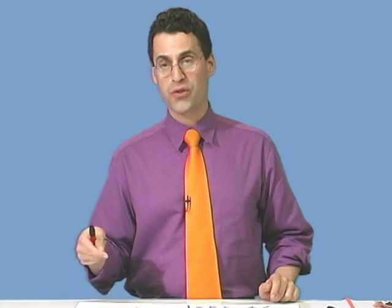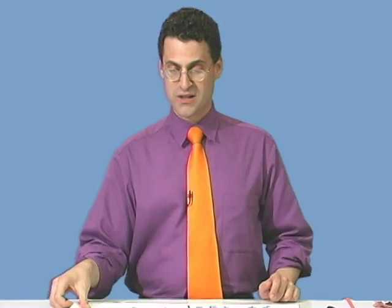But now, in this form, it actually is very easy to see what this equation looks like. It's y equals 2 thirds x minus 1 third. That means that the y-intercept is minus a third, and the slope is 2 thirds. So that means rise over run is 2 thirds.